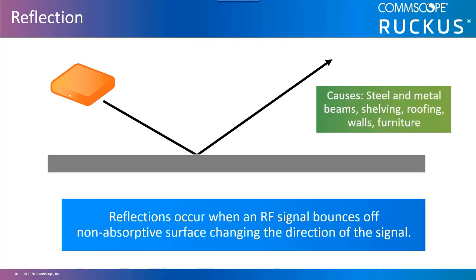One of the most important RF propagation behaviors to be aware of is reflection. When an RF wave hits a smooth object that is larger than the wave itself, the wave may bounce in another direction. This is categorized as reflection, and occurs when an RF signal strikes an object it is not allowed to pass through, does not diffract around, and is not absorbed by.